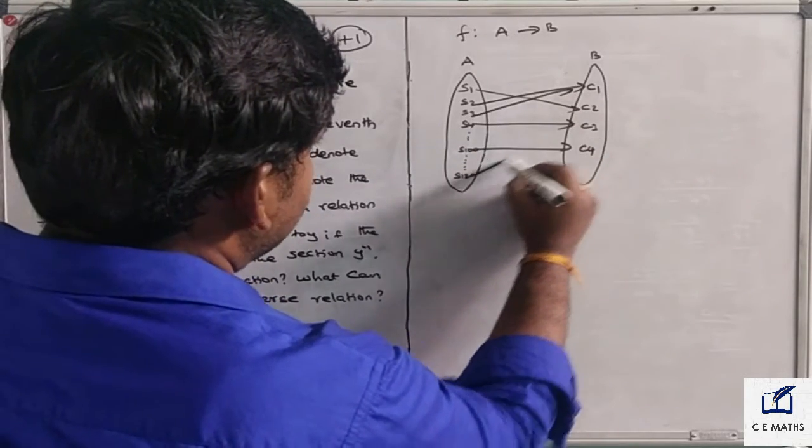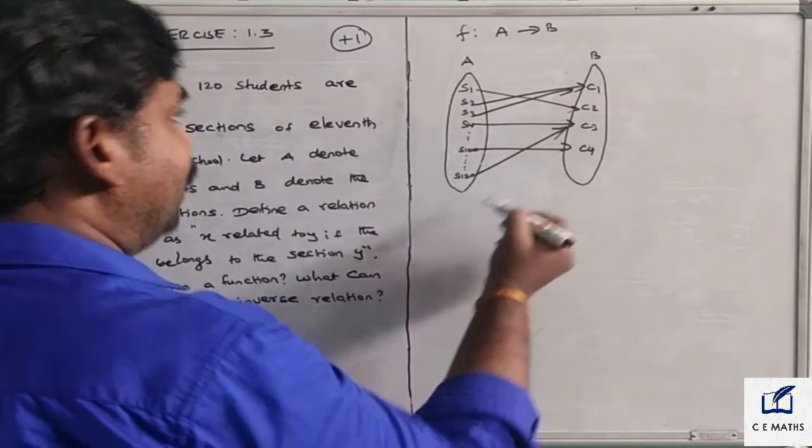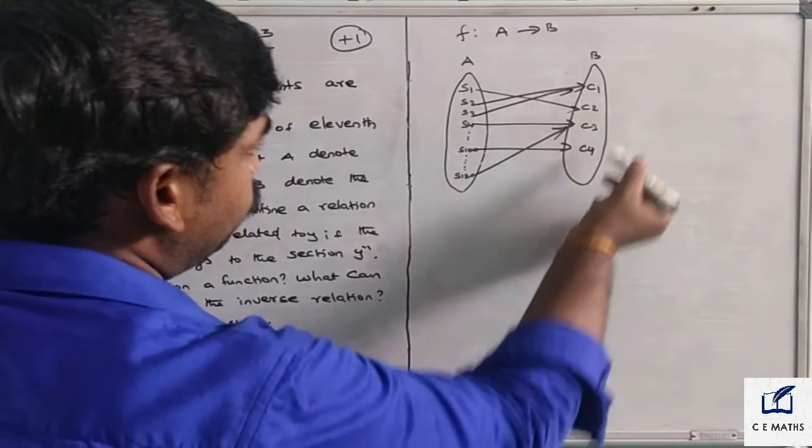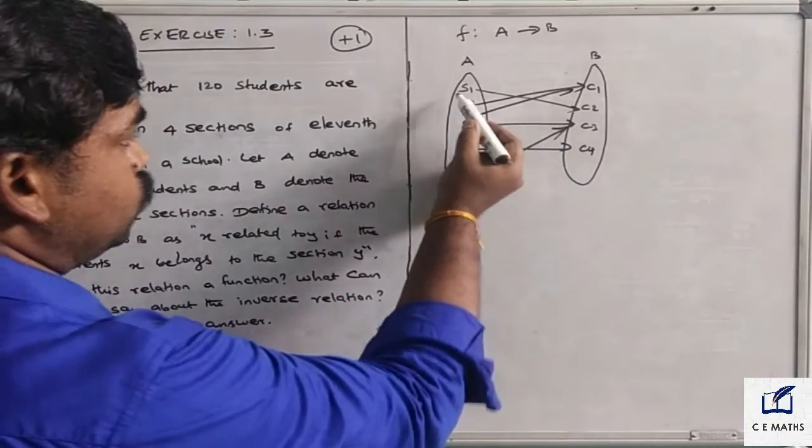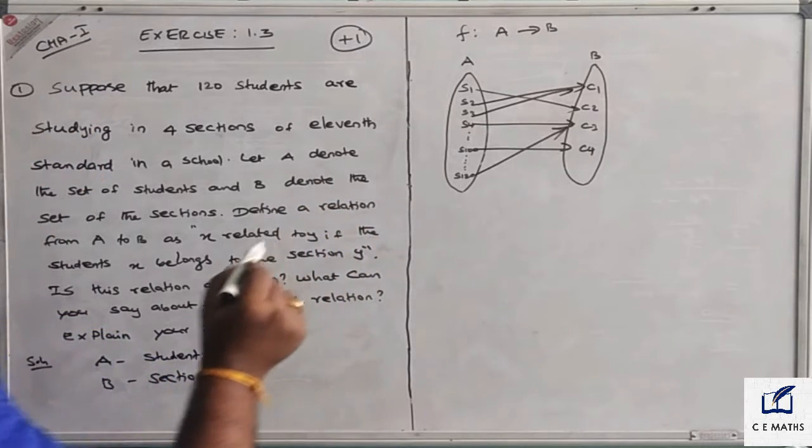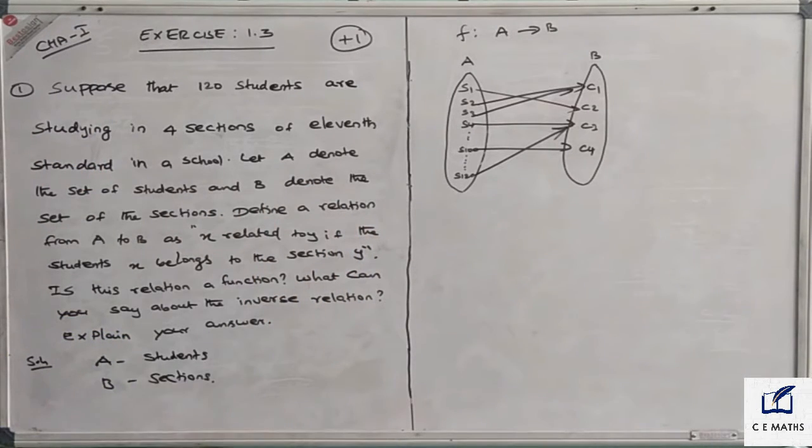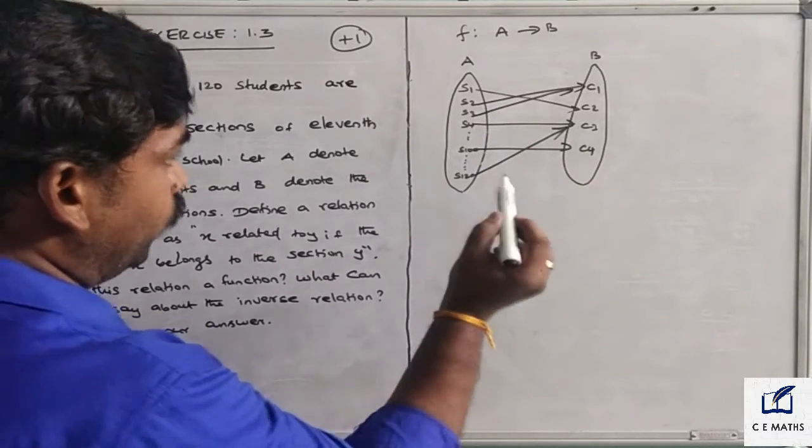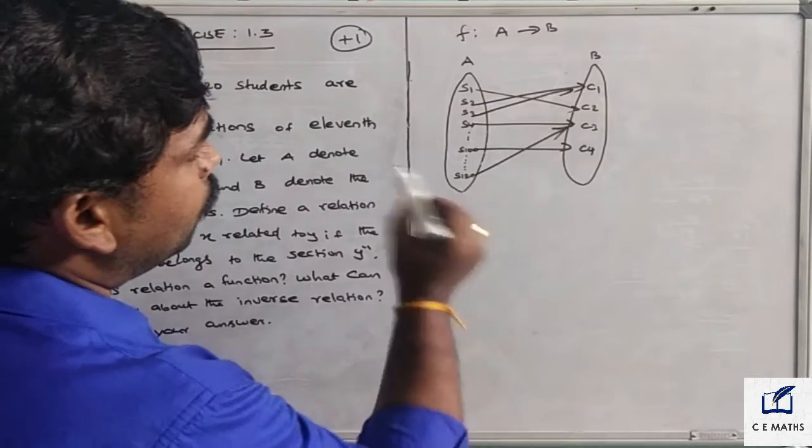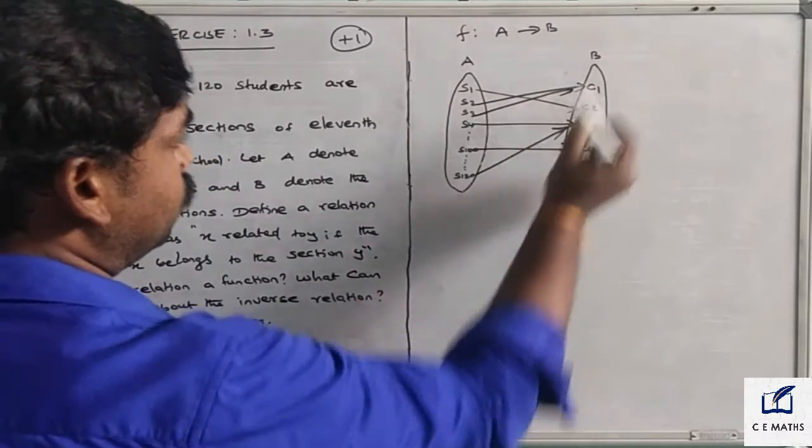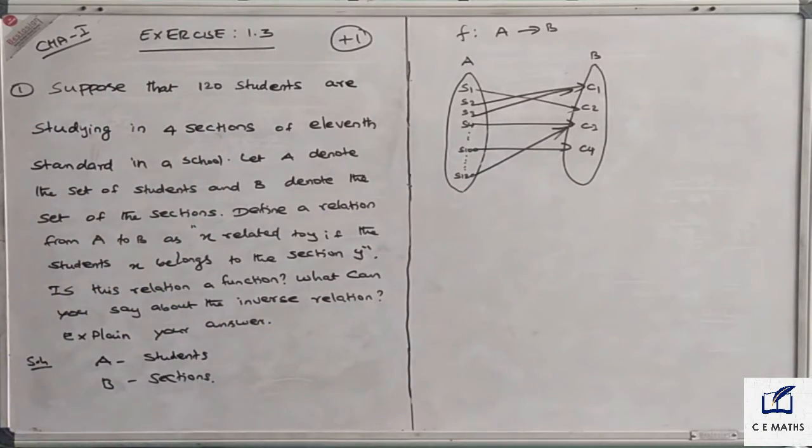S100, S120 - for all elements in A, all students are mapping to a unique class. S1 goes to C1 class, but S2 also goes to C1. S1, S2, S3 - students map to unique classes. So every element in your domain has a unique image in the codomain.